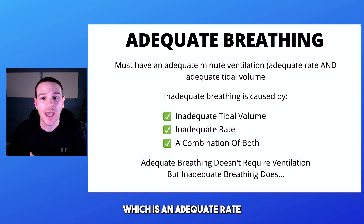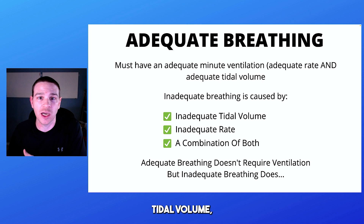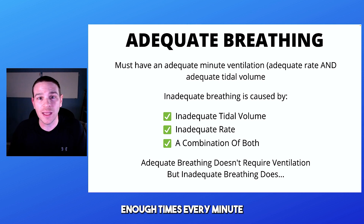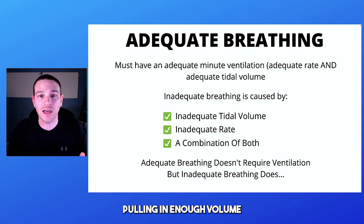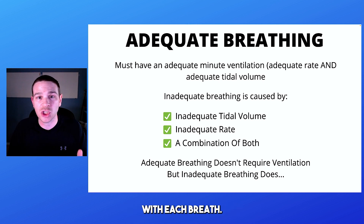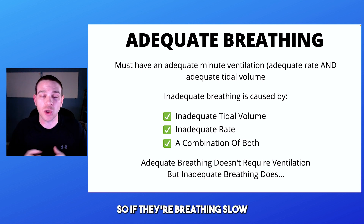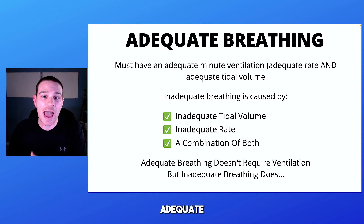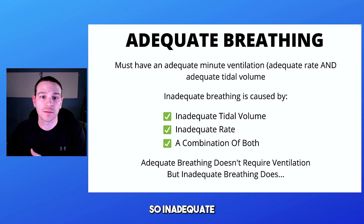A patient must have adequate minute ventilation, which is an adequate rate and adequate tidal volume. That means they have to be breathing enough times every minute and pulling in enough volume with each breath. If they're breathing slow and shallow, then they're not going to have adequate minute ventilation or adequate breathing.